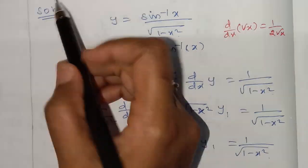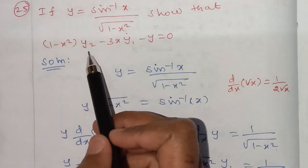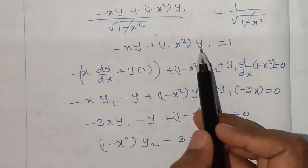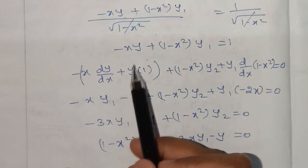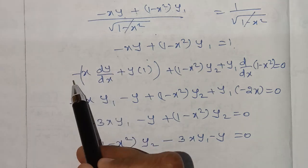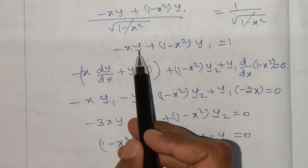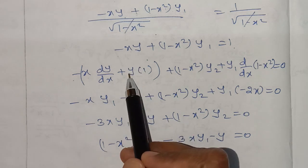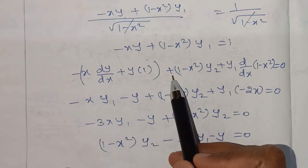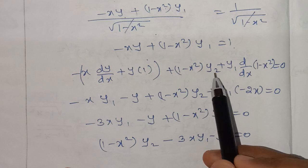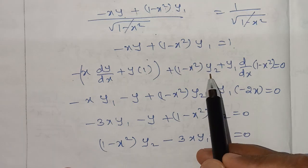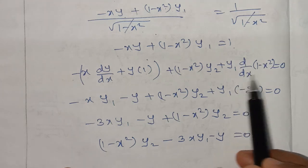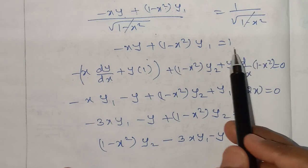Now differentiating again to get y₂: differentiating both sides with respect to x, applying the product rule on (1 minus x²)·y₁. We get y₁ times d/dx of (1 minus x²) plus (1 minus x²) into dy₁/dx, which gives y₂.